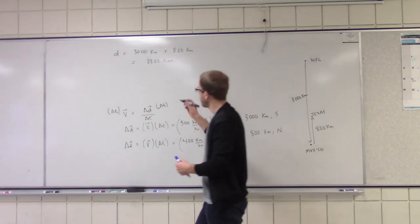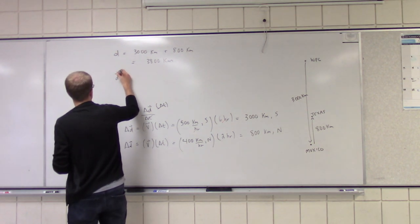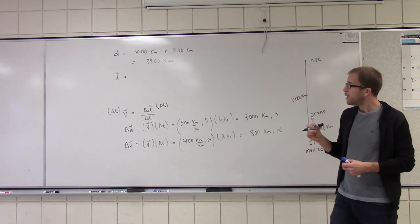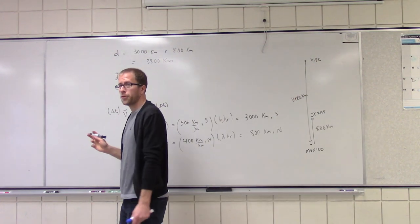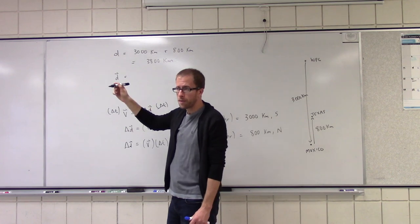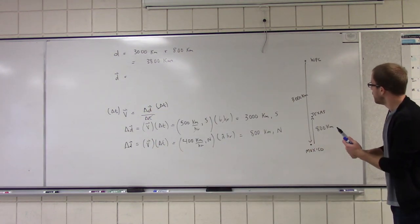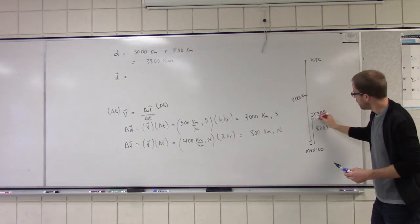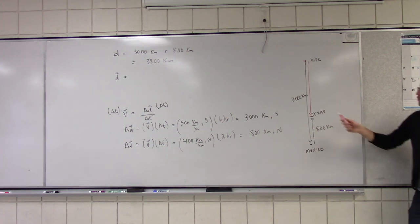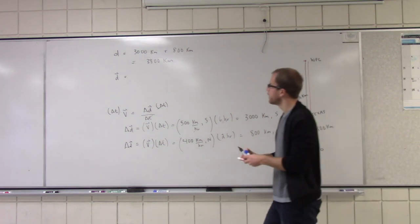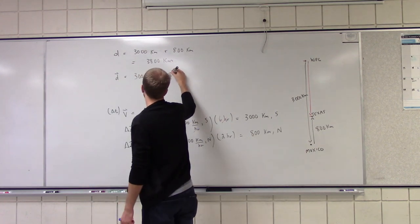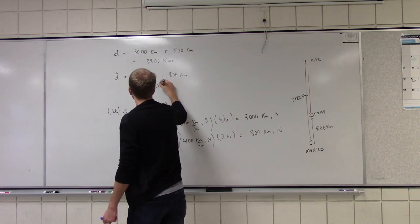And then what about my total displacement? 3,000 minus the 800. Exactly — because this was 3,000 kilometers south and this was 800 kilometers north, so you need to subtract them. We're looking for the total displacement from start to finish, so that will be 3,000 minus 800. Our total displacement is 2,200 kilometers south.